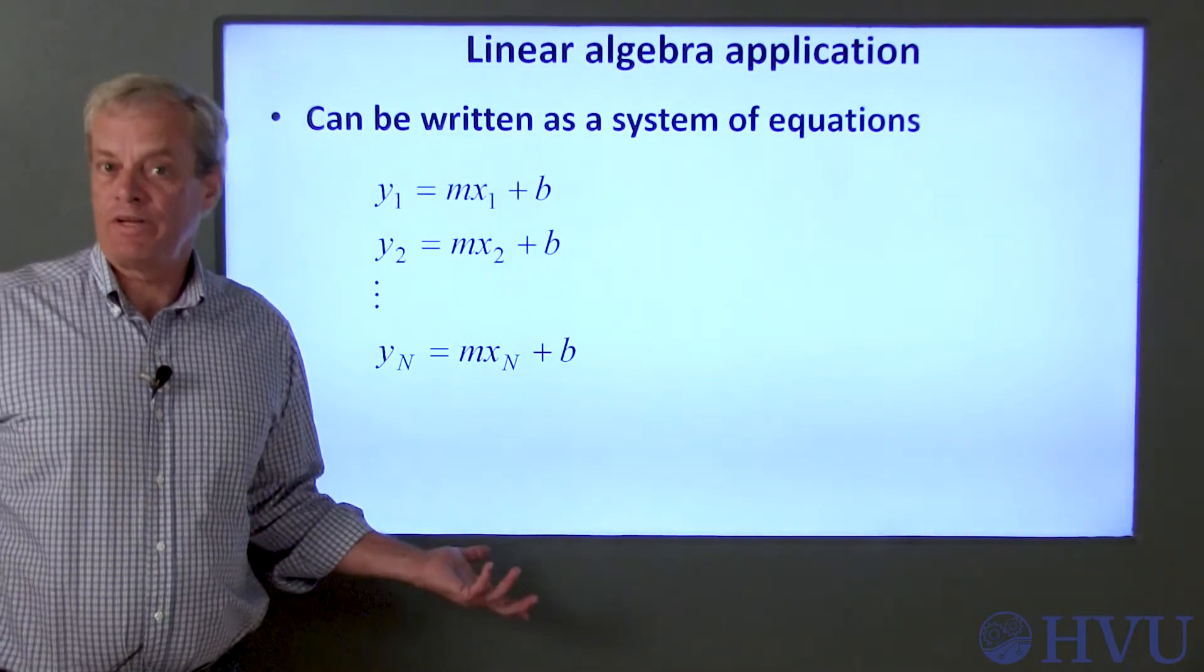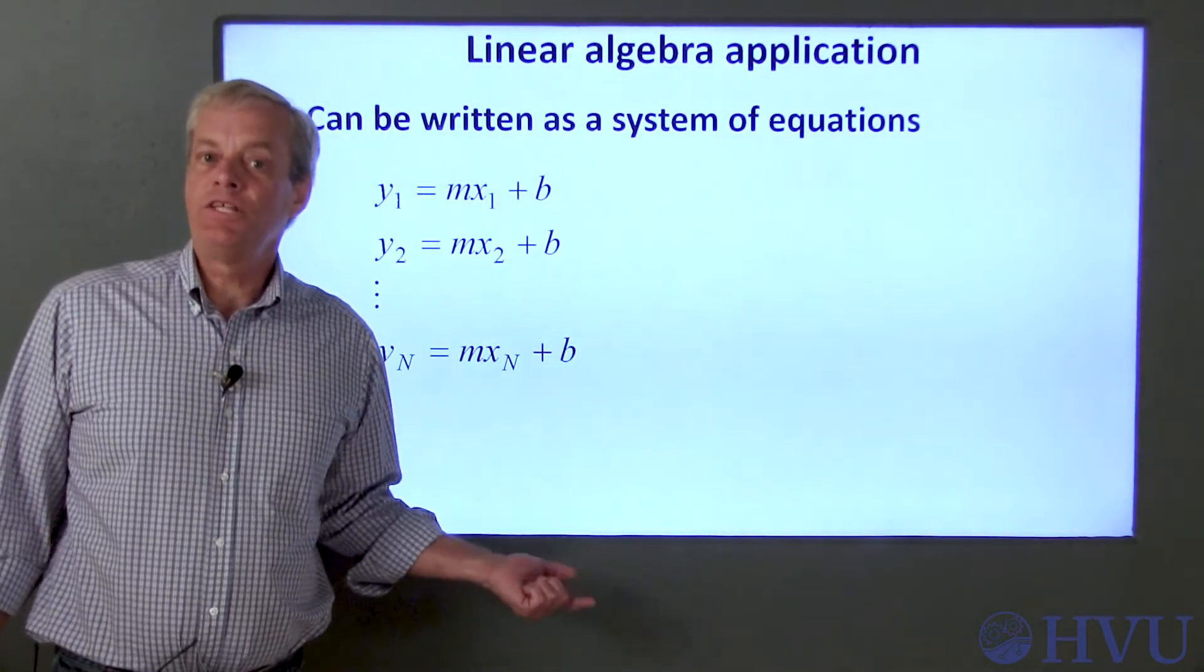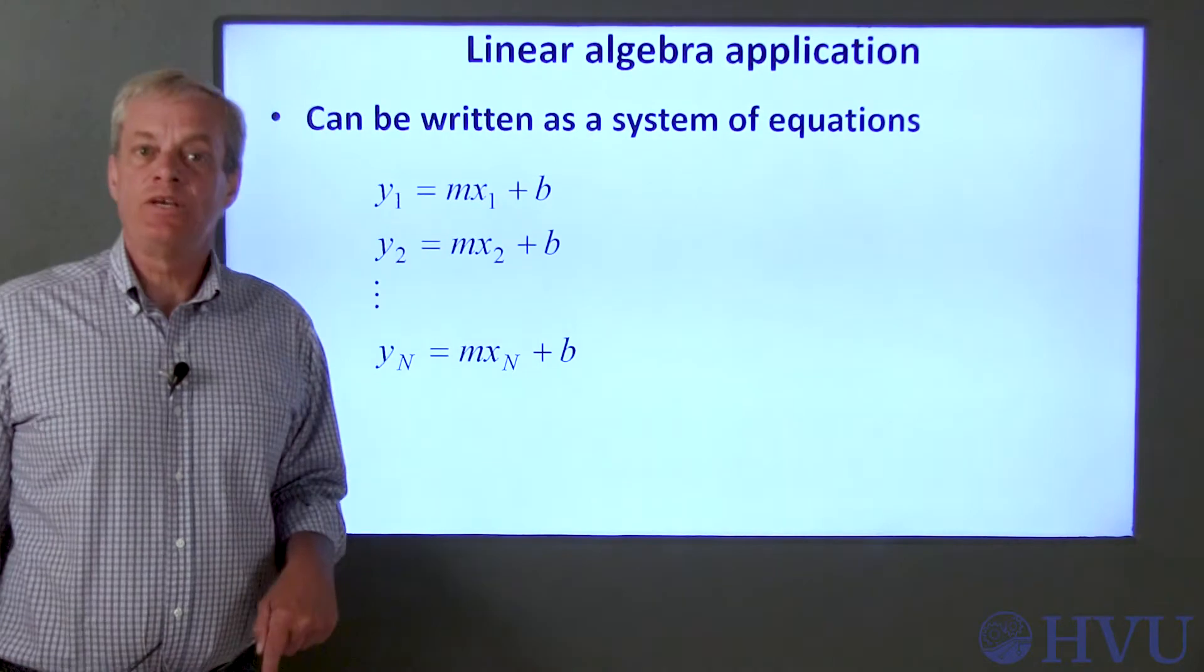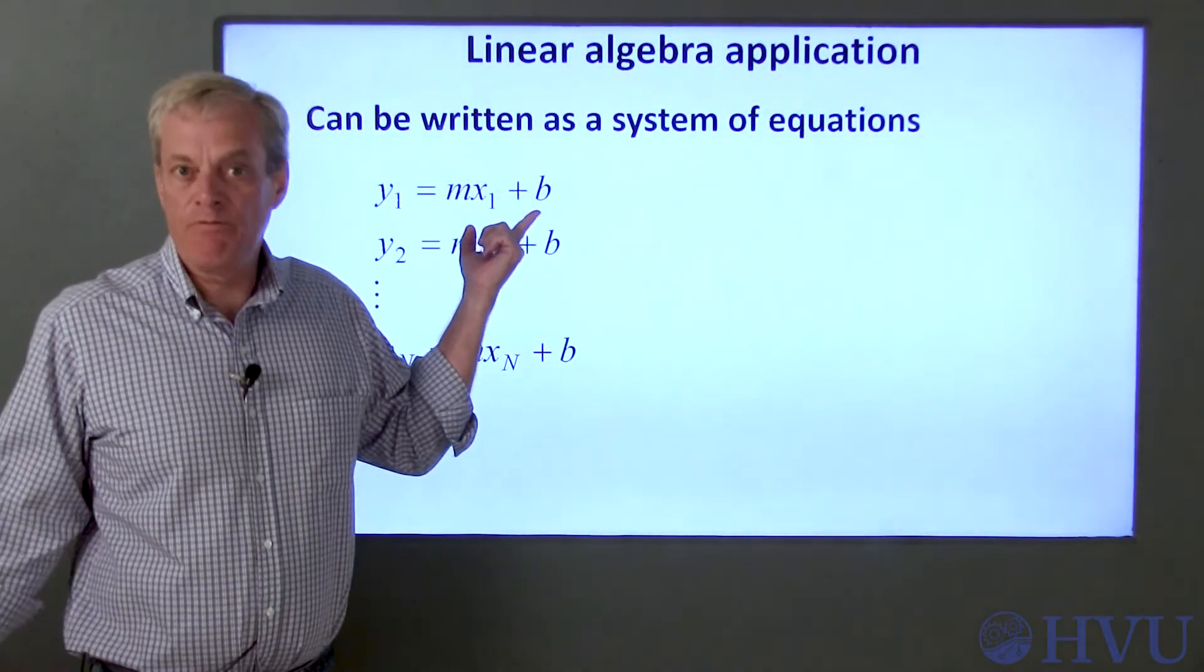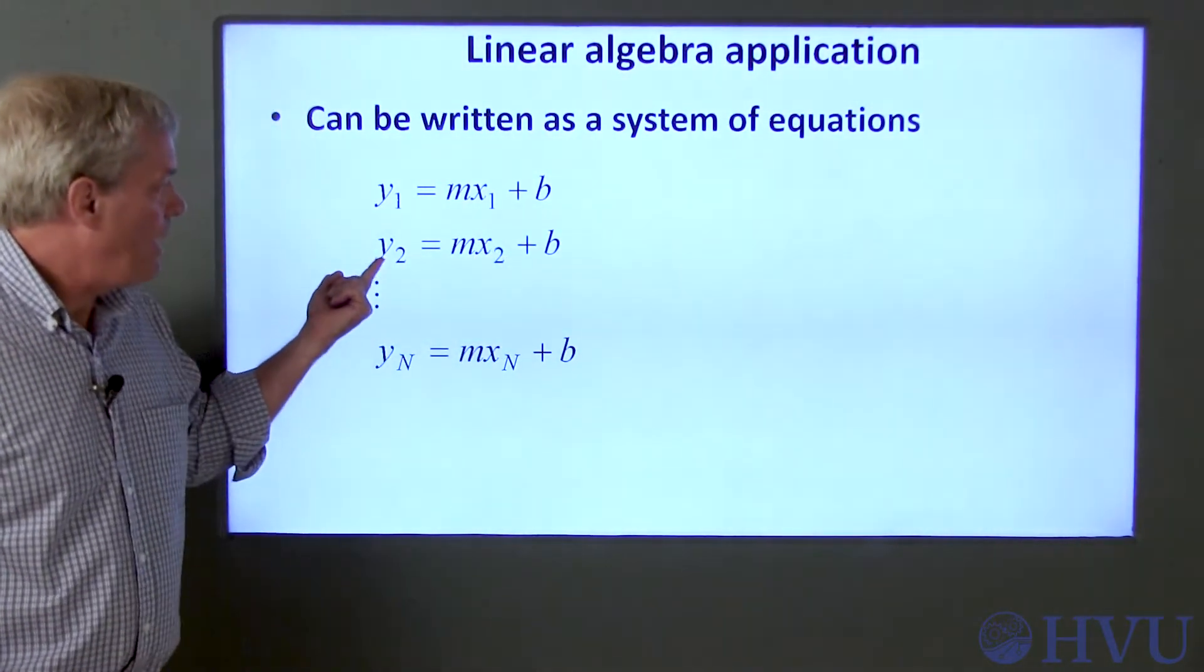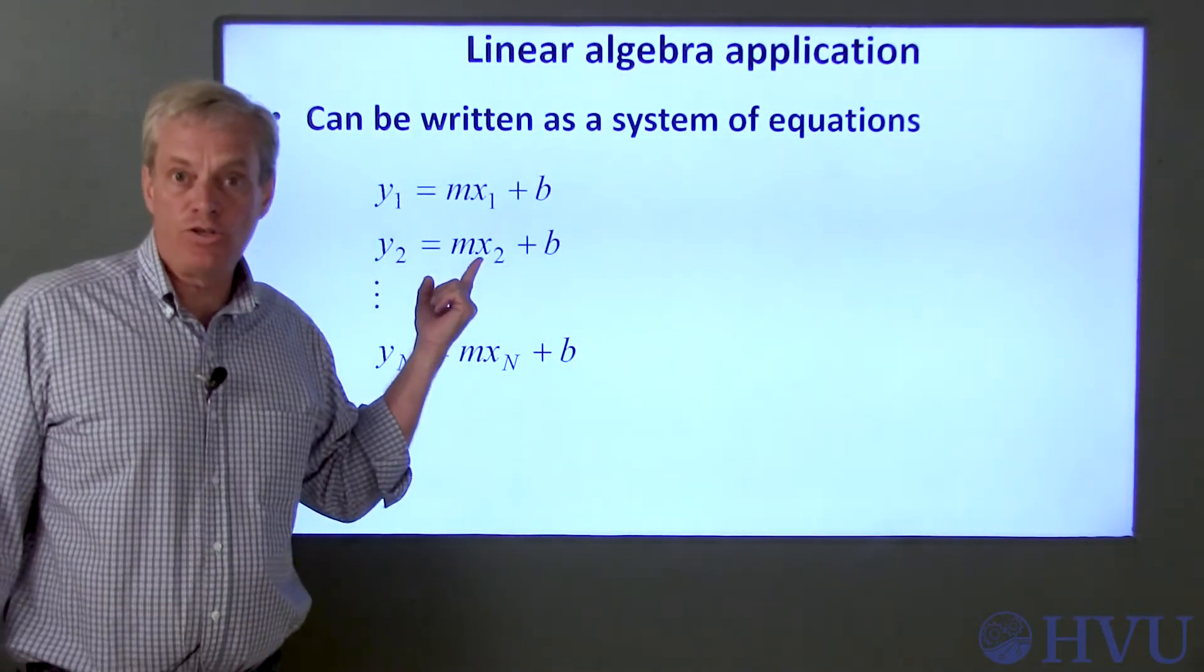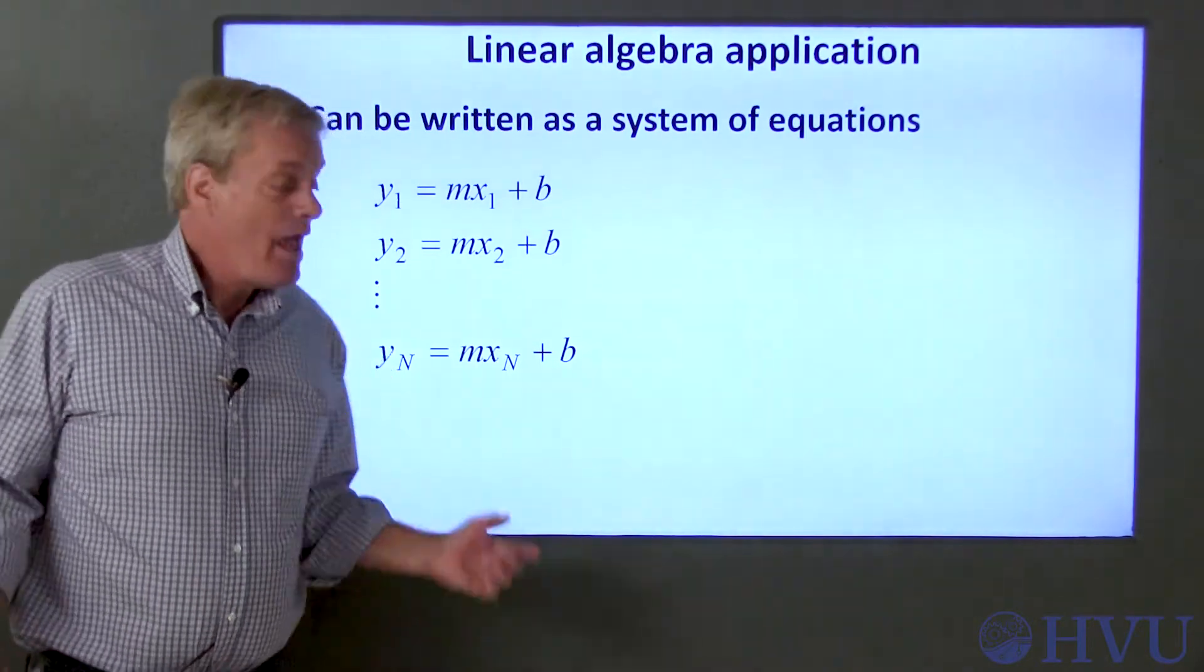Now I'll talk a little bit about using Octave to do this process. Remember that we have a bunch of pairs of XY data. If we plug each of these sets of values into the equation of a straight line, we get Y1 is equal to M times X1 plus B for the first pair of data points, Y2 is equal to M times X2 plus B for the second pair, and so on.